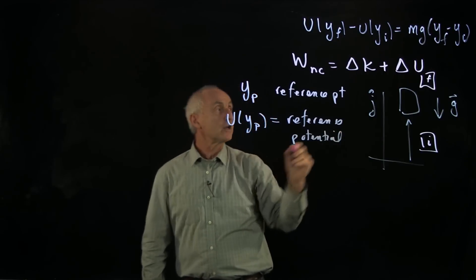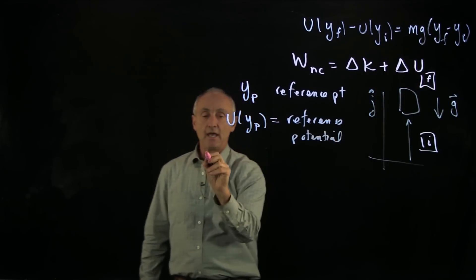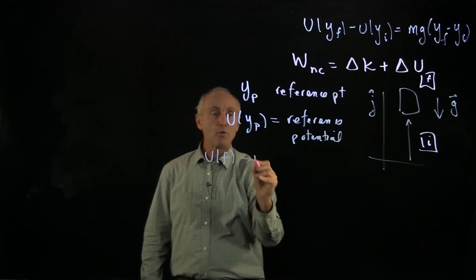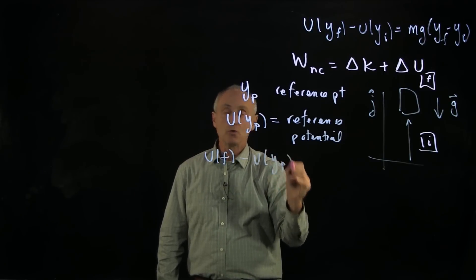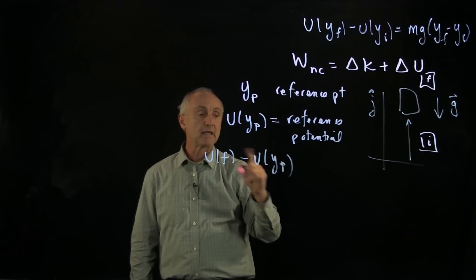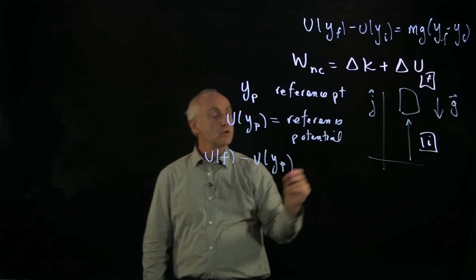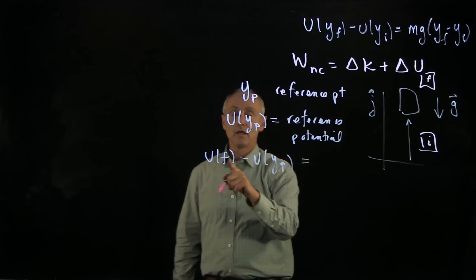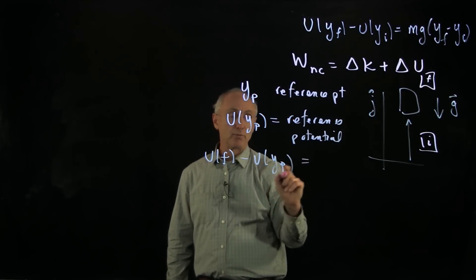And if we want to talk about the potential energy in a final state, we'll always refer it to the difference between that and the reference point. So this is delta u between the final state and the reference point.